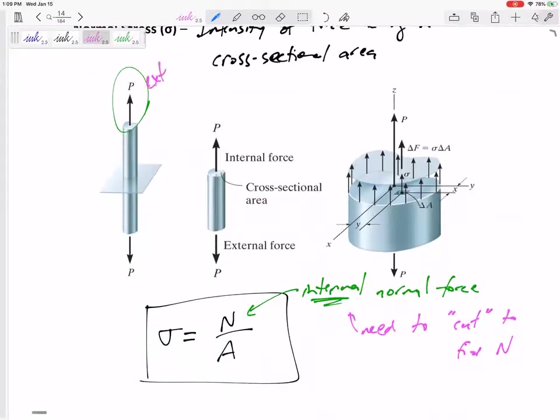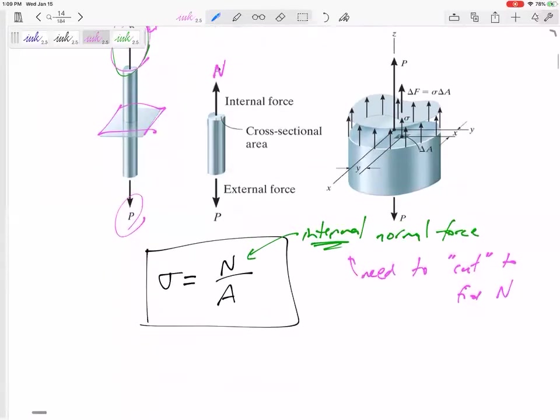So this is the external, but if it's a very simple problem where you've got these two external P's, then when you cut it, let's call this N. When you cut it, you'd solve for N. All right, so the normal stress is equal to the internal normal force divided by the cross-sectional area.